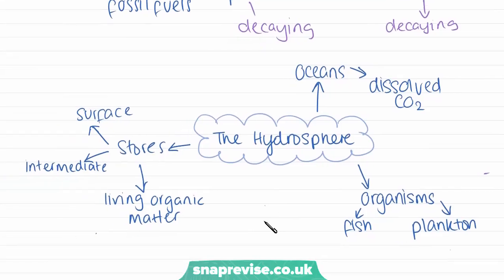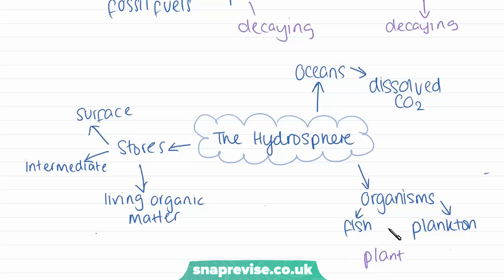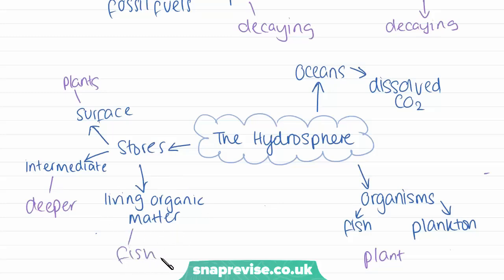The hydrosphere is mainly the oceans. CO2 — carbon dioxide — is dissolved into the ocean water. We also find carbon locked up within organisms such as fish, plankton, and oceanic plants that live in the upper regions of the ocean. Carbon is stored in the oceans at three levels: the surface level, where most plants are found since they need sunlight for photosynthesis; an intermediate deeper water layer; and within living organic matter such as fish and plankton.